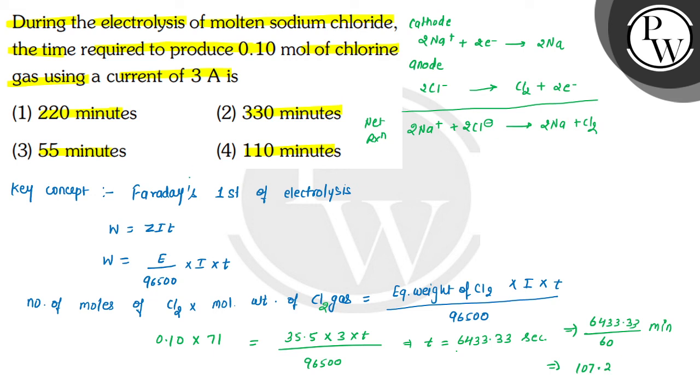So if this value 6433.33 divided by 60, this value is in minutes. So this will be approximately 107.2 minutes. But here in this question, this approximate value is given. So approximately we can write it is 110 minutes.